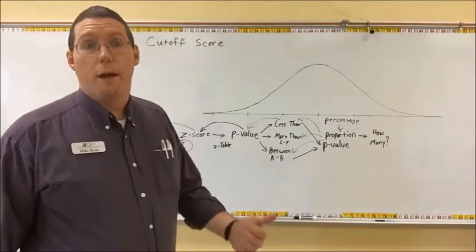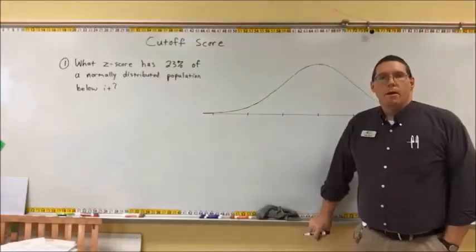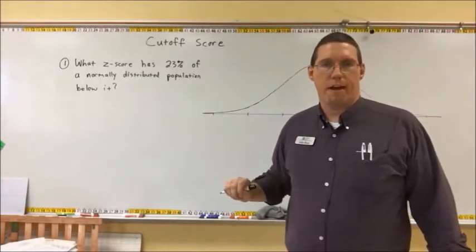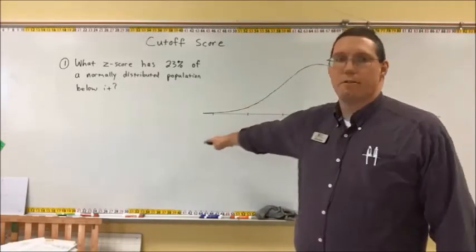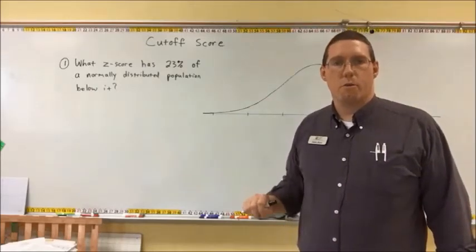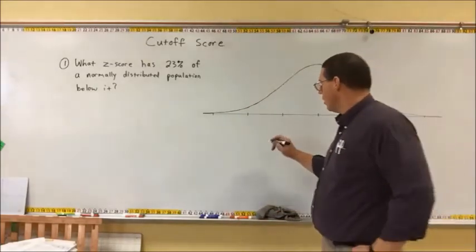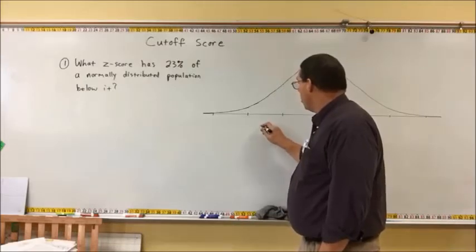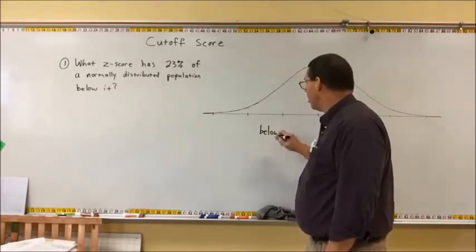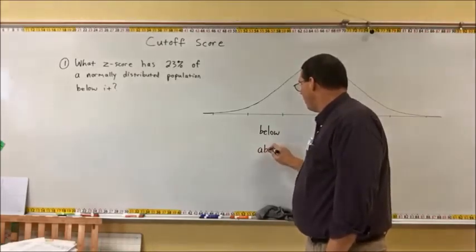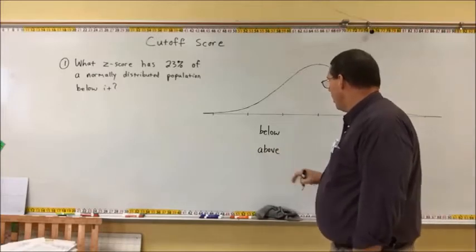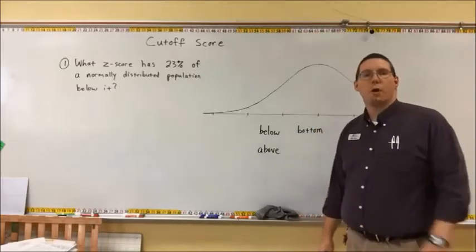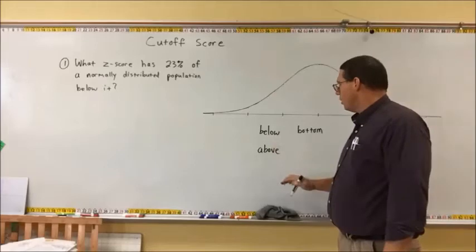I'm going to give you a procedure and we're going to do it step by step. In this first question, we're not going to go all the way back to the x-value — we're just going to go back to finding a z-score. There are three different kinds of problems: questions where everything is below the cutoff score, where everything is above it, and middle questions.